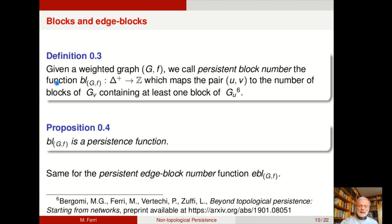This mimics what we have in zero degree persistent Betti numbers. In fact, there we take the number of path connected components of the sublevel set under v containing at least one path connected component of the sublevel set under u. Well, it's possible to show that this function has those two properties. So is a persistence function.